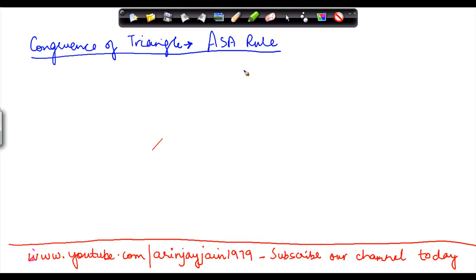In this video we are going to understand the congruence of triangles, the ASA rule. Just like the earlier ones, ASA stands for angle-side-angle. Now this rule is very simple, just like the earlier ones that you saw.